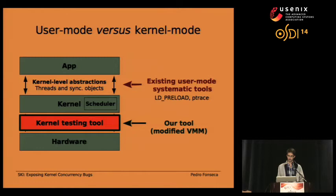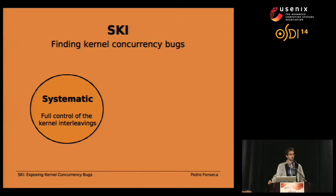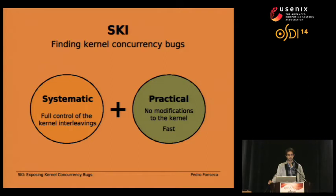We present a tool called Ski that helps developers find kernel concurrency bugs. There are two goals for Ski. The first is that Ski should be systematic — able to explore the interleaving space according to its own policies. The second is that Ski should be practical: it should not require modifications to the kernel, and should be fast enough that this level of control is still useful and effective.